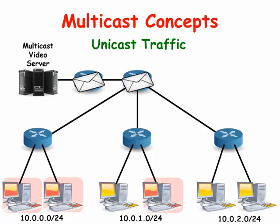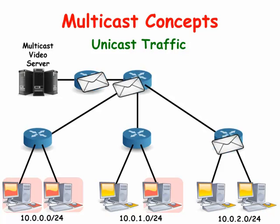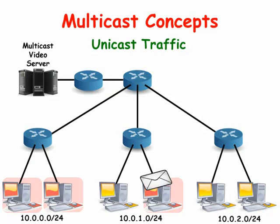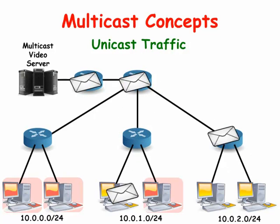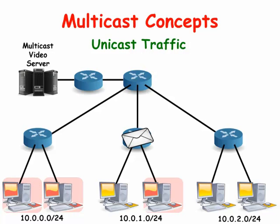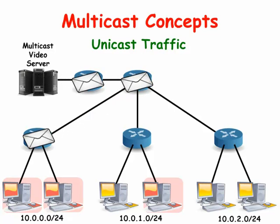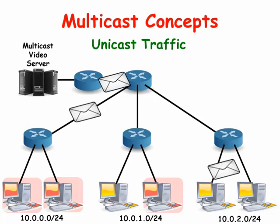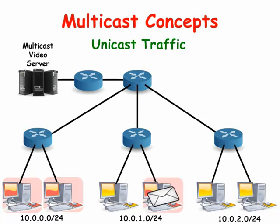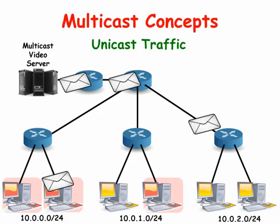Usually, when information is exchanged over the network, we will use Unicast Traffic. This is a point-to-point communication where there is just one sender and one receiver. Unicast transmission has a single source that sends out packets to a specific destination. It is the predominant form of transmission on local area networks and within the internet. Unicast transmission is one-to-one communication.